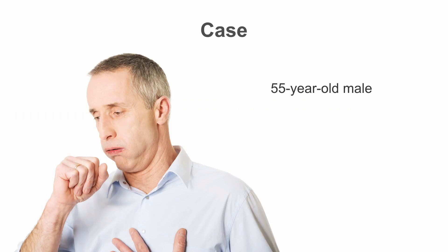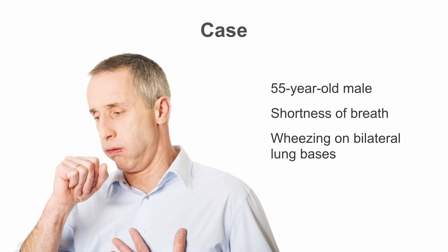Let's begin with the case. You have a 55-year-old male who presents with shortness of breath. On initial exam, you notice him wheezing bilaterally on his lower lung bases. His vital signs are about normal, so you start to think about your initial assessment plan. You may consider ordering some blood work, maybe get a chest x-ray, an EKG, and you think about your differential diagnosis.